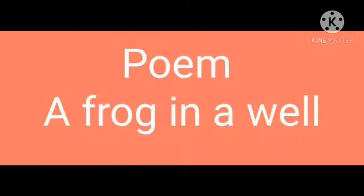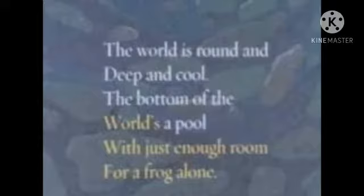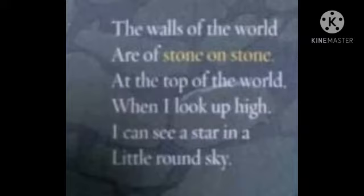This poem tells us how a frog sees the world from its well. So children, let's start with this poem 'A Frog in a Well.' Let us read this poem. When I look up high, I can see a star in a little round sky. Let me tell you about this poem before I explain the meaning.